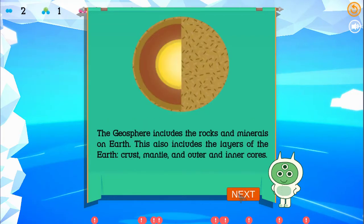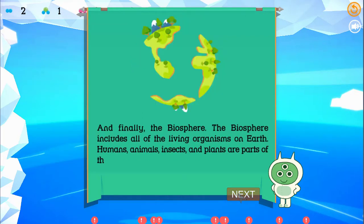The geosphere includes the rocks and minerals on Earth. This also includes the layers of the Earth: crust, mantle, and outer and inner cores. And finally, the biosphere. The biosphere includes all of the living organisms on Earth. Humans, animals, insects, and plants are parts of the biosphere.